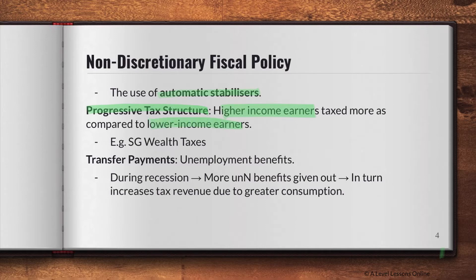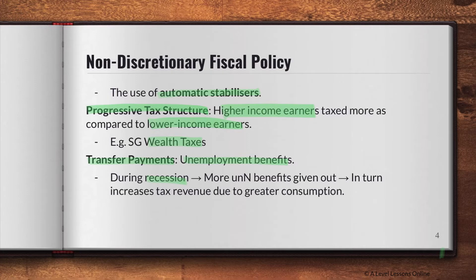In Singapore, this is referred to as wealth taxes. Naturally, if you have higher income you should be taxed more because you're earning so much more than the rest of society. As higher earners are taxed more, greater tax revenue is gained from them, while lower income earners are not taxed as much. This helps ensure society remains equitable and lessens income inequality. Another automatic stabilizer is transfer payments, which refers to unemployment benefits. During a recession, household incomes are falling and purchasing power drops, leading to a fall in consumption and a further fall in AD.